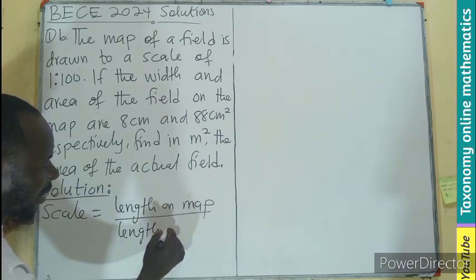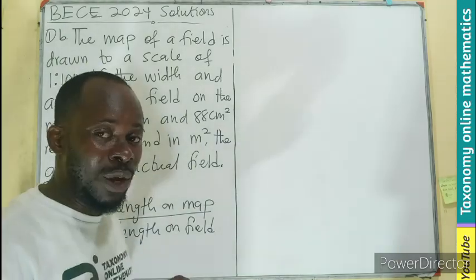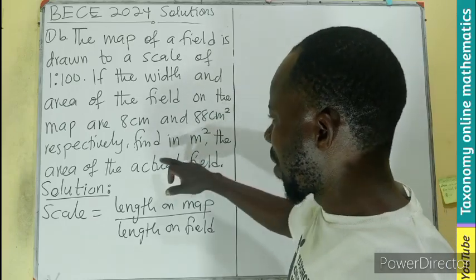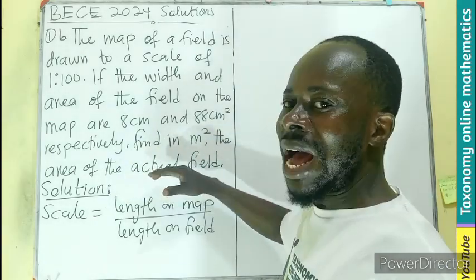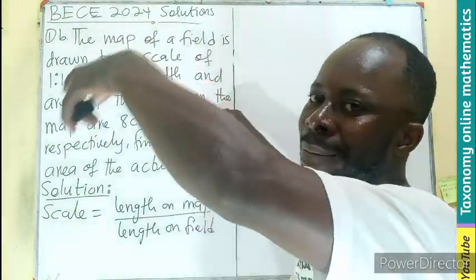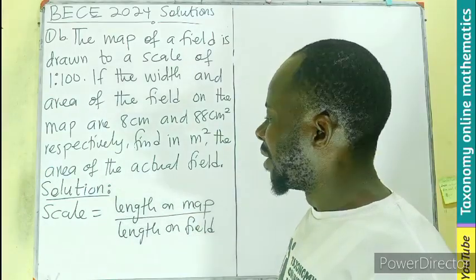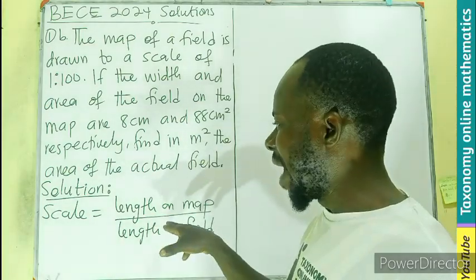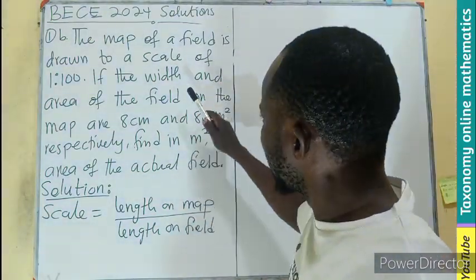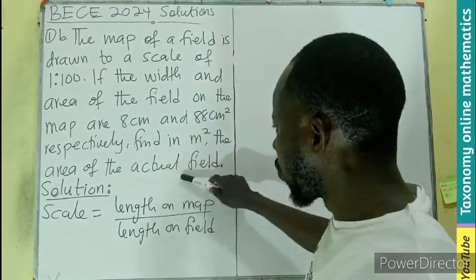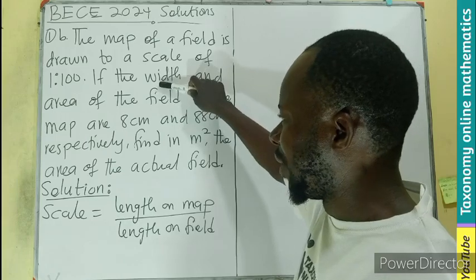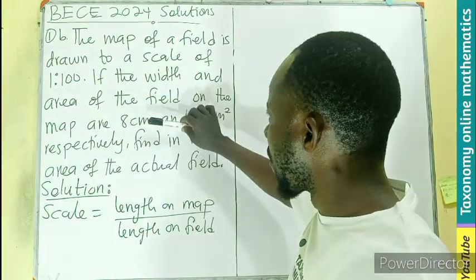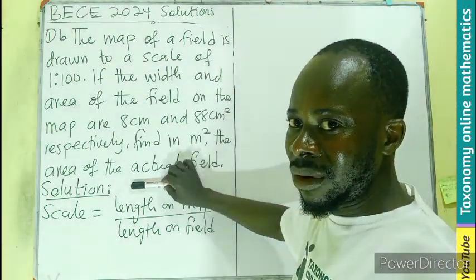Let's see: the length on map, then length on field. That is if we are dealing with length or width. Here we are dealing with the area because the question is asking for meters squared — the area of the actual field — knowing the area on the map. So we are going to ignore the length in our calculation. We are not asked to find the length or the width of the actual field, so we move from width to area, which is a two-dimensional calculation.